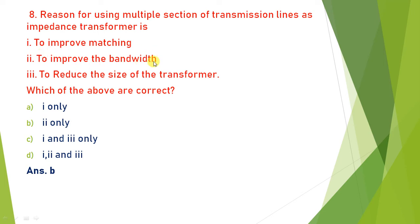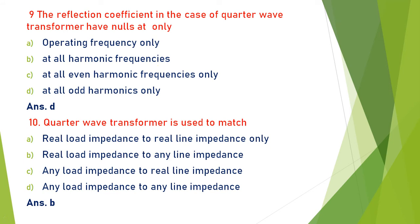Next: the reflection coefficient of a quarter wave transformer has nulls at which frequencies? Observing the theory of reflection coefficient for this transformer, at the nulls only odd harmonics are concentrated. At very high frequency, both even and odd harmonics are present in mixed form. So at nulls we have only odd harmonics — answer is (d).